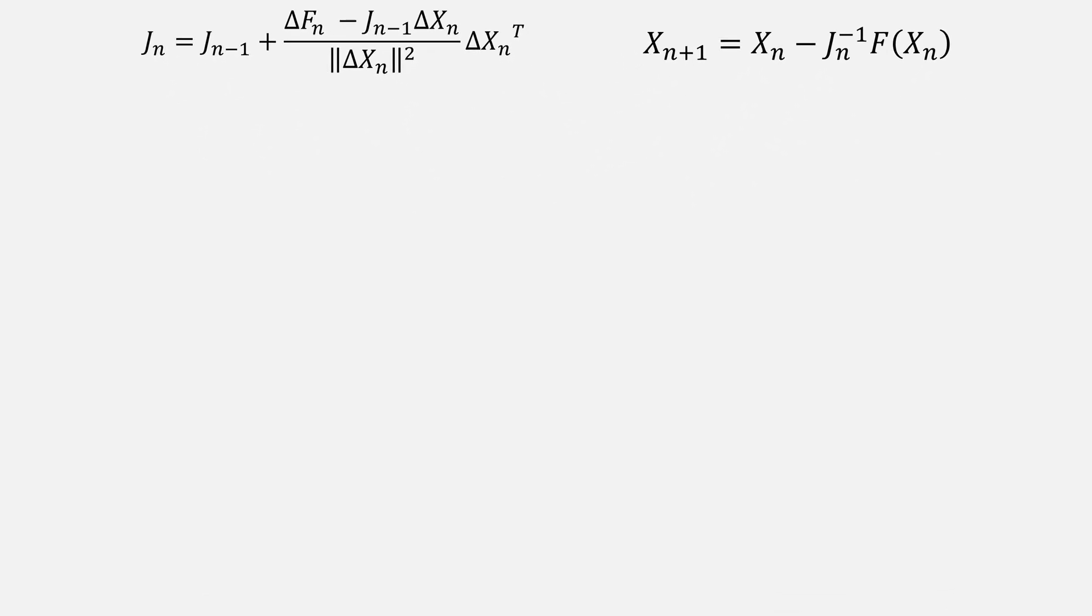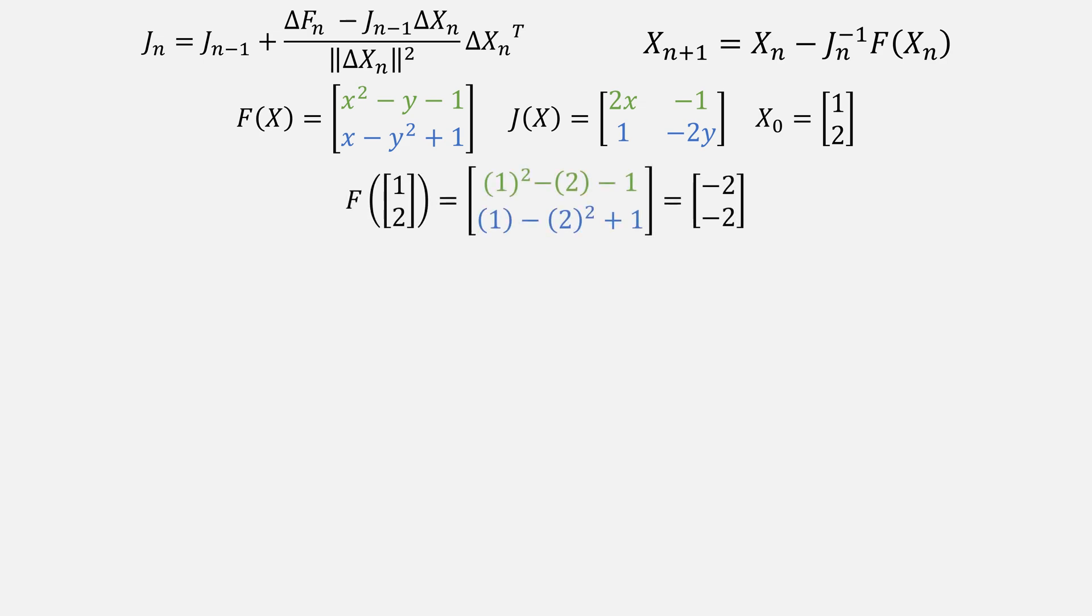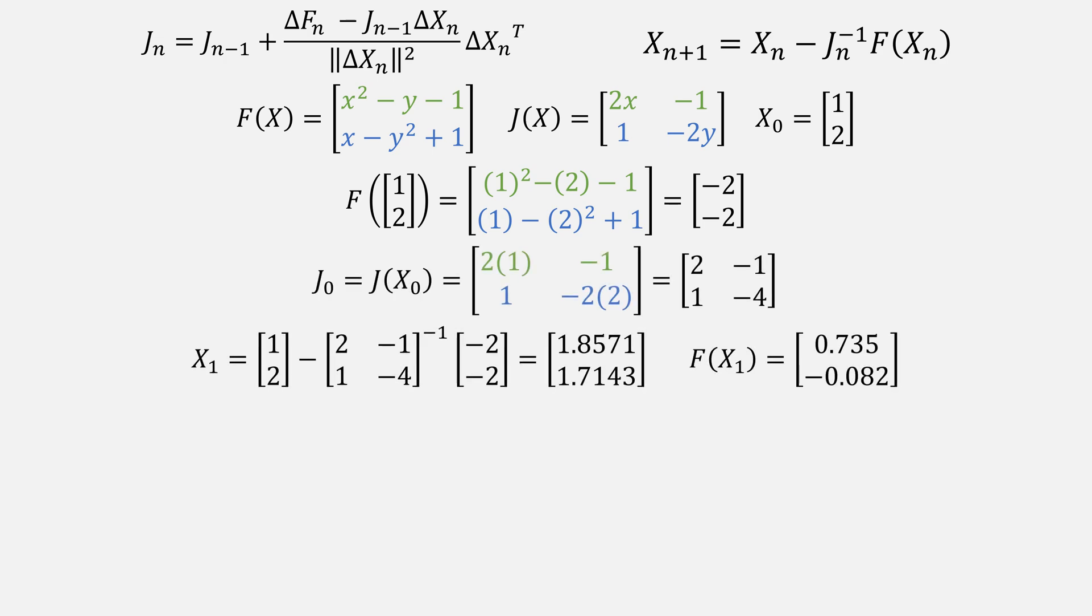Even though we find exactly Broyden's method, it's still useful. Let's try it on our earlier system, starting from the point 1, 2, evaluating the function at that point, as well as the Jacobian. You could also use differencing to find this. Then use Newton's method to find our next value for x and evaluate the function at that point.